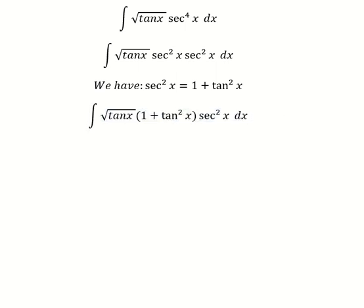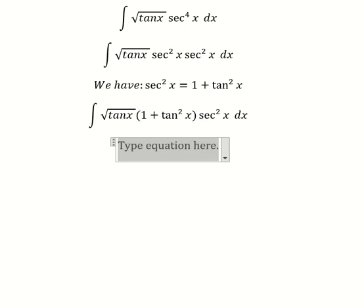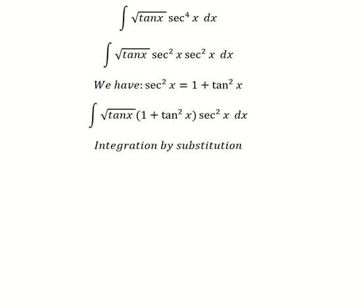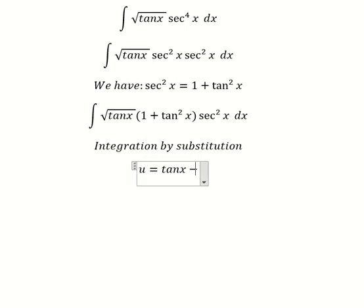Next, we can use integration by substitution. I will set u equals tan x. Then we need to take the derivative of both sides, and we have du equals secant squared x dx.